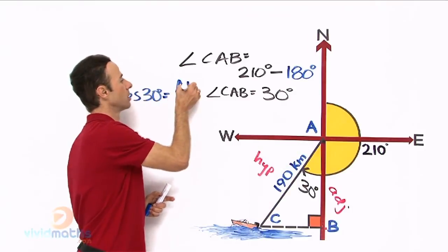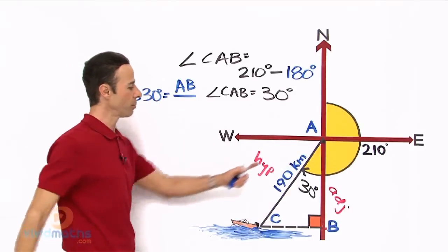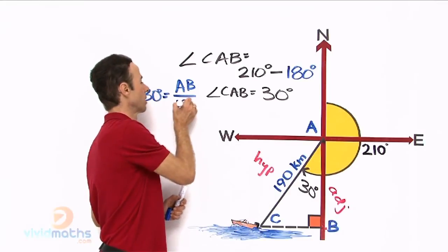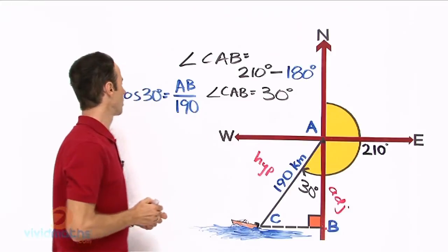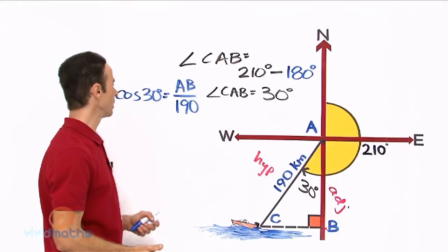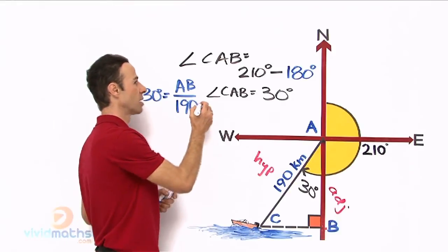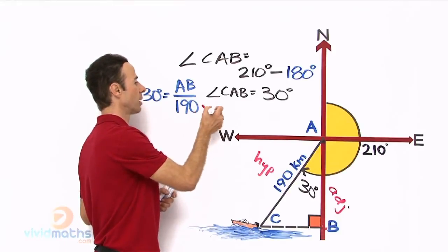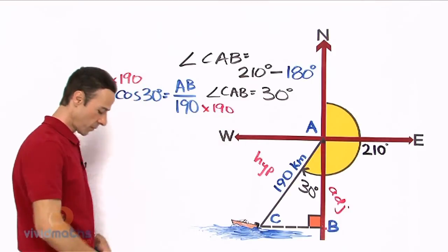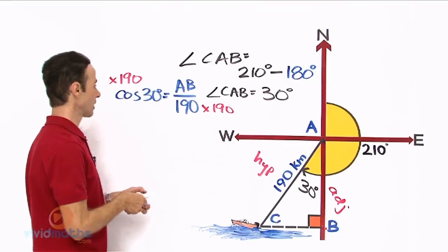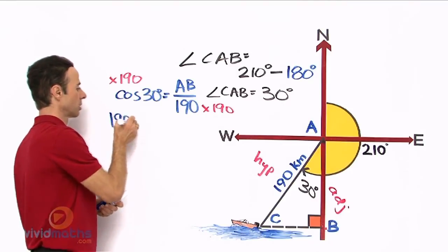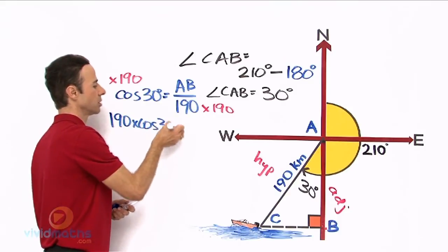All over the hypotenuse we know is 190 kilometers here. Now let us multiply both sides by 190. When we do that we can leave the AB by itself. So let us do that, so times by 190 on this side, times by 190.